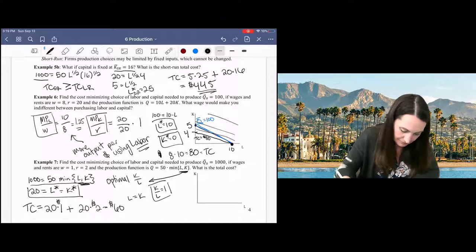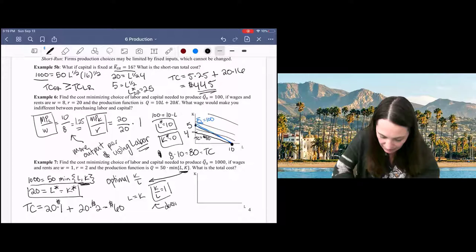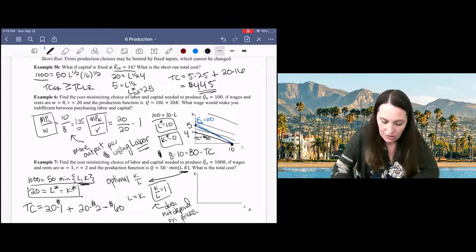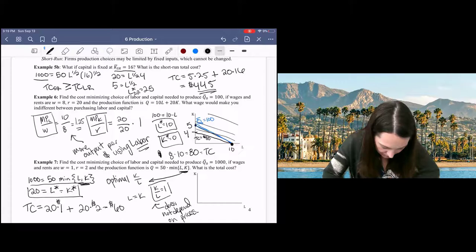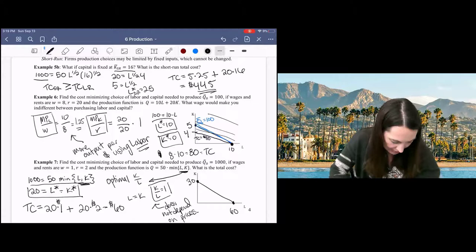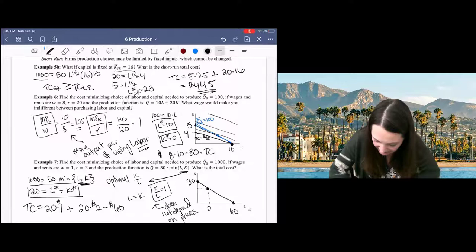Notice that the optimal capital labor ratio does not depend on the prices. And so what we have here is our iso-cost curve, $60. I could afford 30 units of capital or 60 units of labor, but I need to consume them at the same amount. I want them to be equal to each other, and so I end up here to produce my 1,000 units of output.